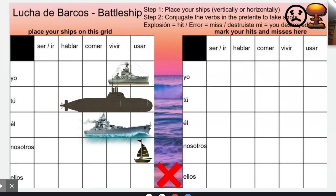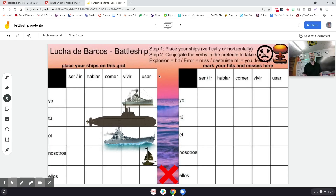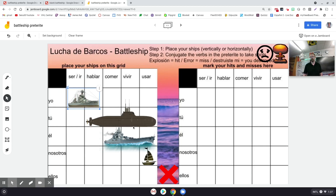I'll also give you a link to this Jamboard as well as two other Google Drawings that I used to create this Jamboard. I see this working like this: the students — I force them to make a copy of this Google Jamboard. They have a partner and they both have initially the exact same Jamboard. And then what they're going to do — let's say I'm playing with you — this is my Jamboard. I'm going to grab these ships and I'm going to move them, just like in traditional Battleship, wherever I want them.